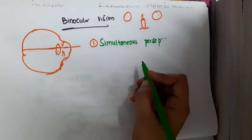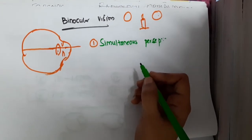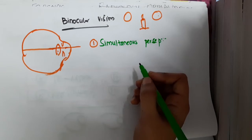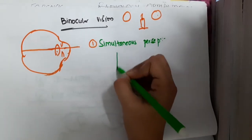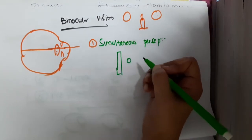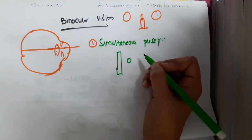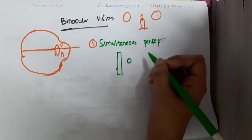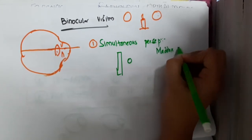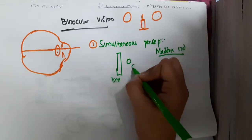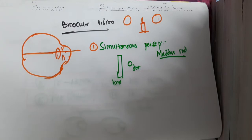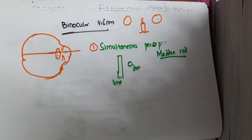In simultaneous perception it is not necessary that you see the same object — it can be different objects, and those different objects can also be visualized together. The example is the Maddox rod, where we have a line and a dot, and both these can be perceived together. That is simultaneous perception.